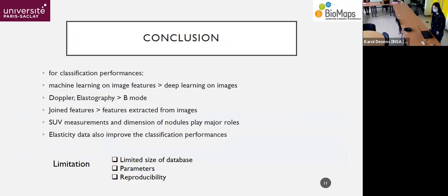So, the conclusion is some interesting finding we have got in the study. So, in terms of the classification performance, the machine learning on image features is better than only the deep learning on the image. And in terms of the three images, the Doppler and the elastograph, they give better performance than the B-mode. And the joint features, they have better performance than the features only from the image. So, what helped the joint features to have better performance is the SUV and the dimension of the nodules. And also, the elasticity data, they have also improved the classification performance.